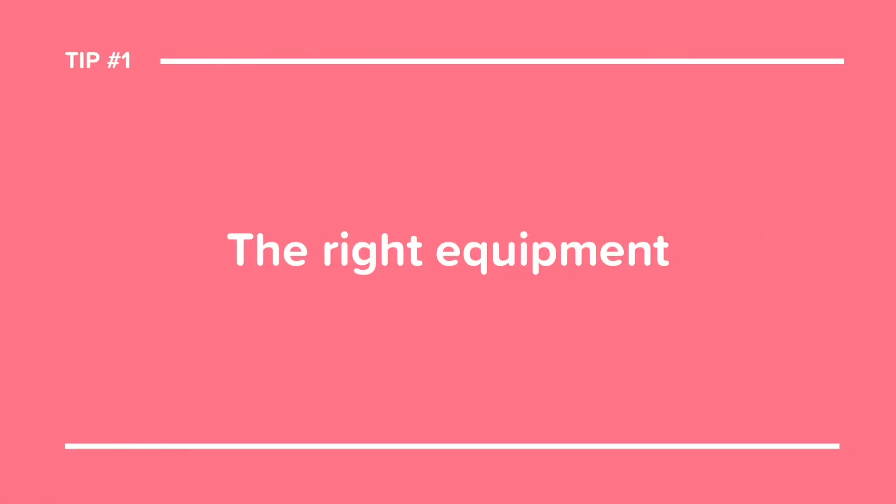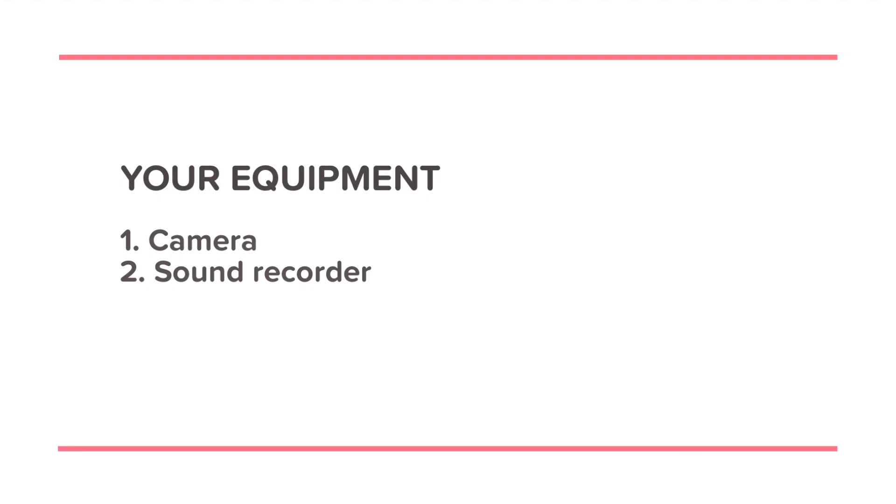Number one: the right equipment. First things first, you need two basic but really important things: one, a camera, and two, a sound recorder. We use an Olympus camera on a tripod and a Zoom H5 sound recorder for sound. It's really that simple. Plus, if you don't have a camera available to you, you could just use a smartphone. But I highly recommend investing in a good sound recorder.